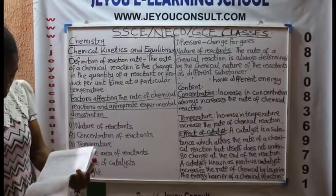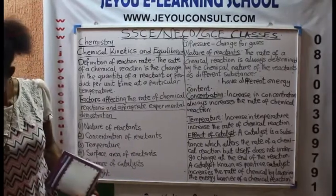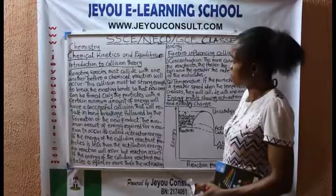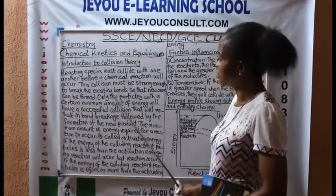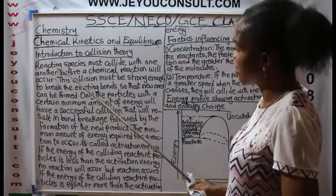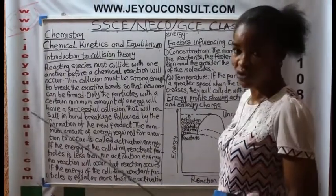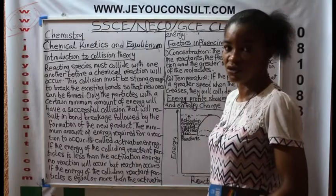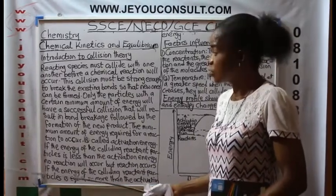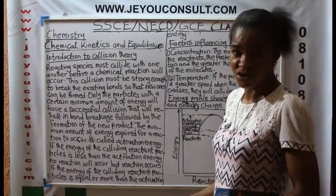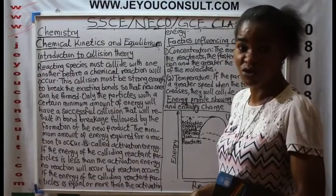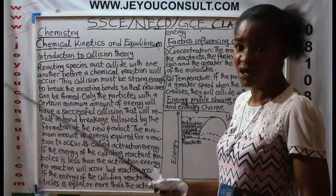We will now go into the introduction of collision theory. Reacting species must collide with one another before a chemical reaction will occur. For instance, carbon plus oxygen — those are two reactants. Before carbon will react with oxygen, they must collide with one another, and then they will form the product, which is carbon dioxide.